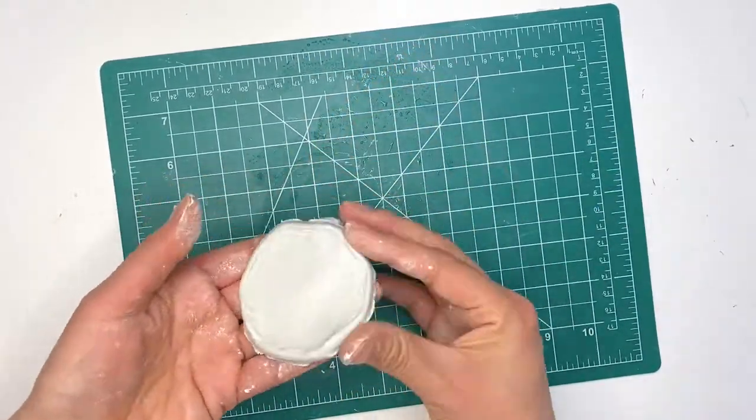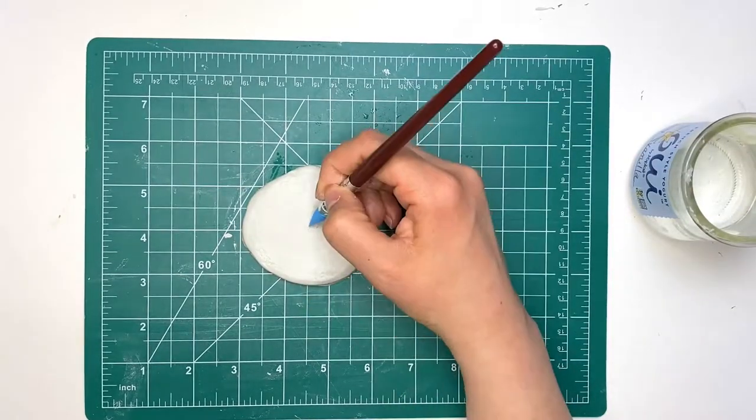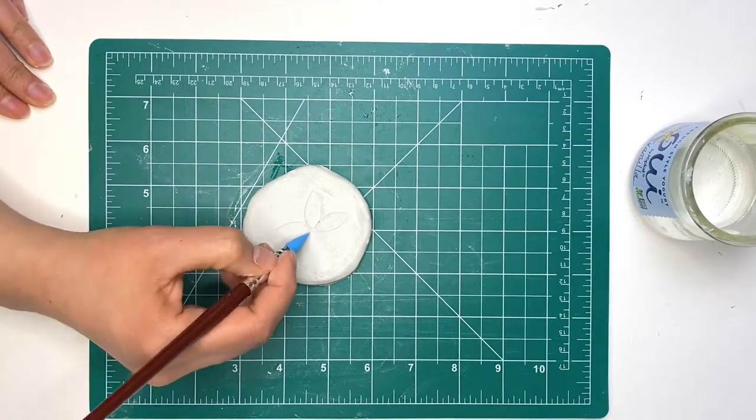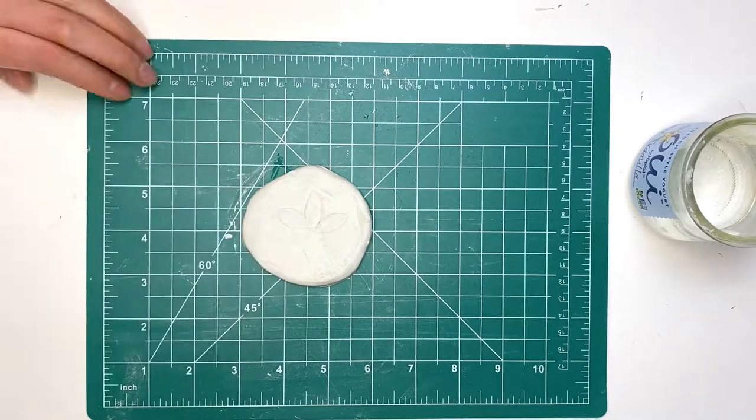Once I was happy with my circle, I used this clay sculpting tool to lightly carve out a flower shape in the middle of my circle that sand dollars usually have.